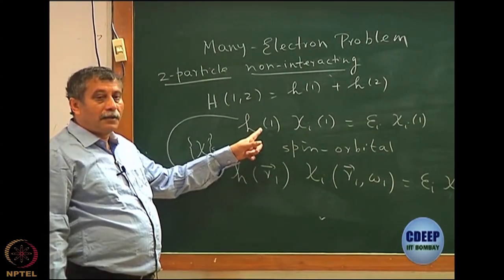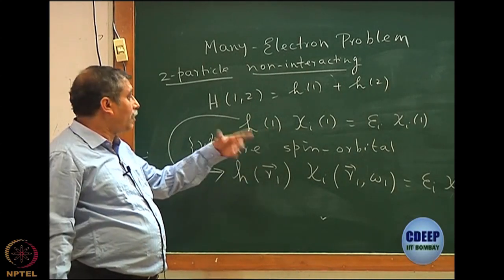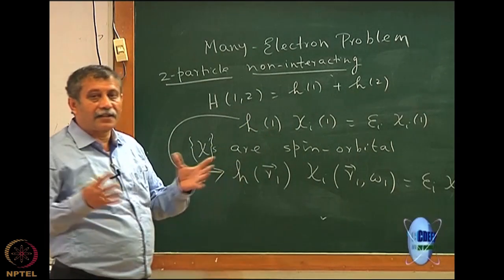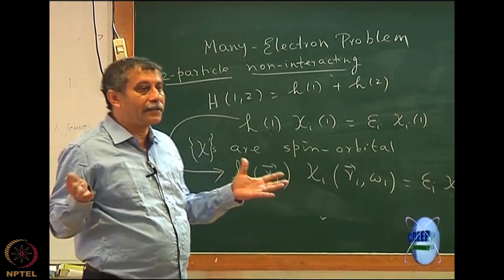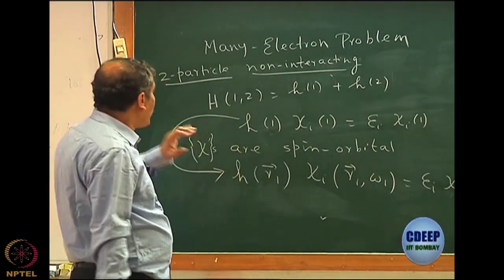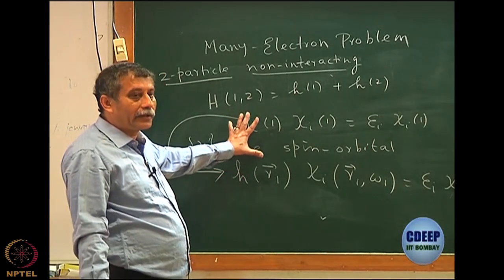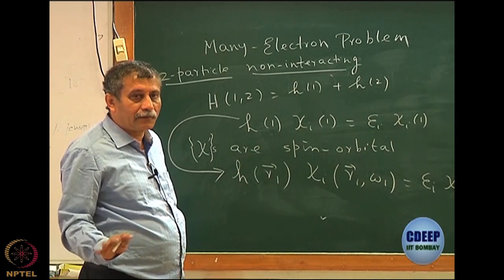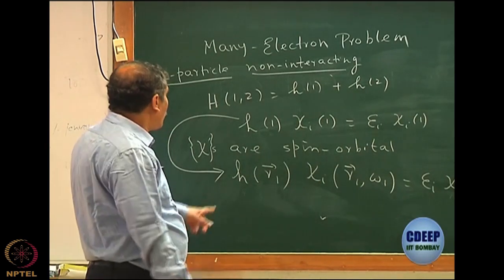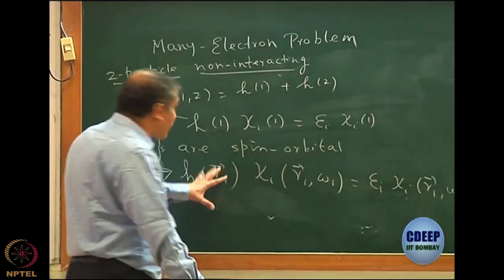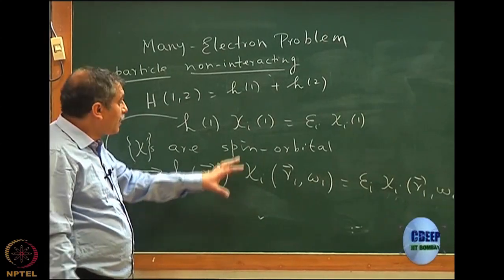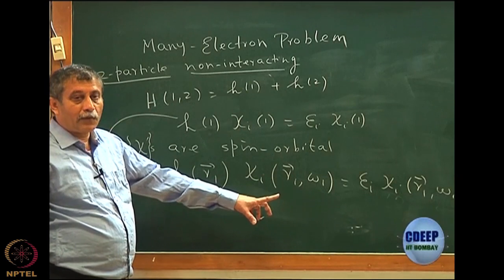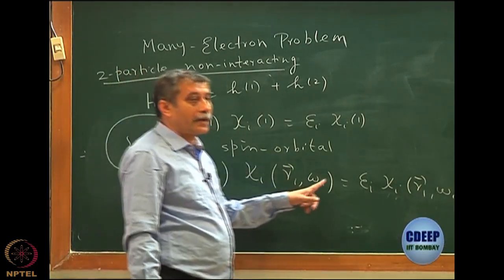This can also have spin in a many-particle problem, or even for the hydrogen atom when there are other effects like relativistic effects. We are not worrying about those effects in the Hamiltonian. Our entire discussion is actually non-relativistic quantum mechanics. The operator itself does not have a spin.